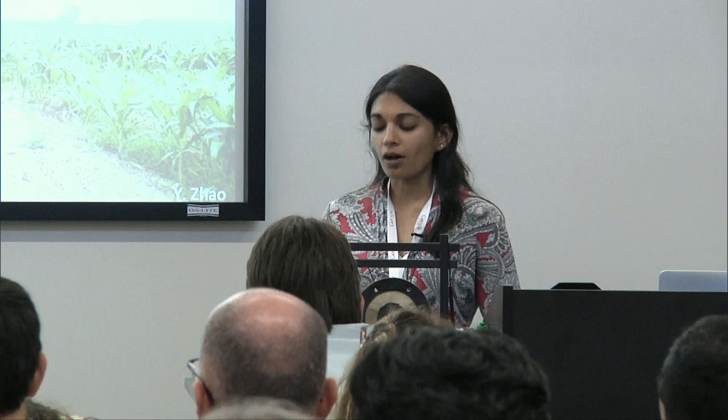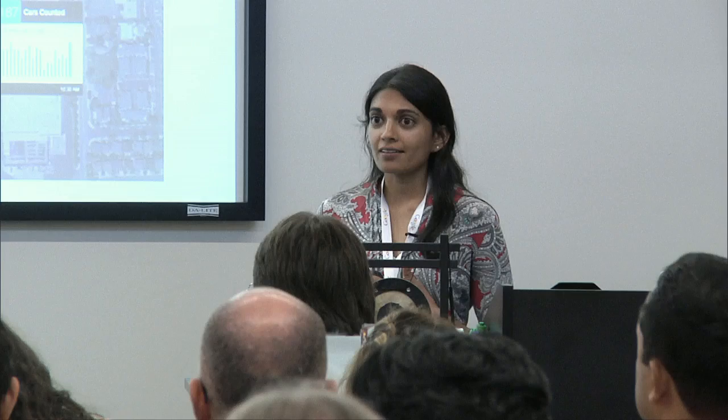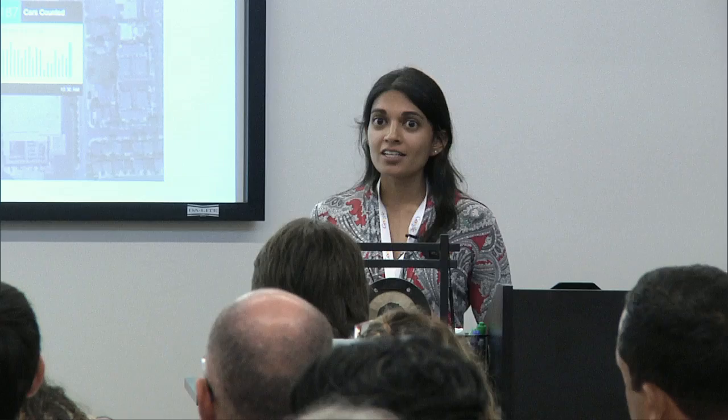We think this is a really exciting time for mapping yields using satellites for three different reasons. First, there's been a big increase in the amount of satellite data available. This is through NASA — here's a graph showing the number of missions from NASA in each decade — and you can see that in our current decade we have about two times or more the number of missions than any previous era. In addition to NASA, we're getting a lot of additional datasets from private organizations like DigitalGlobe and also new micro- and nano-satellite companies like Skybox and Planet Labs.